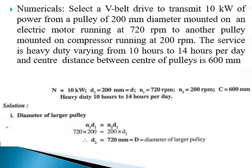Diameter d1 = 200 millimeters (smaller pulley). Speed of smaller pulley N1 = 720 RPM. Speed of larger pulley N2 = 200 RPM. Center distance C = 600 millimeters. The drive runs for heavy duty of 10 to 14 hours per day.